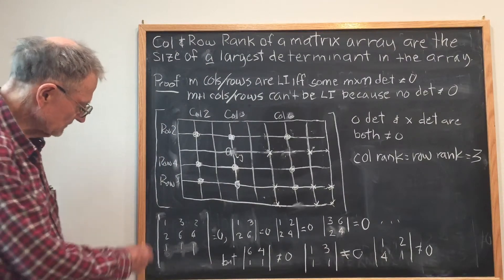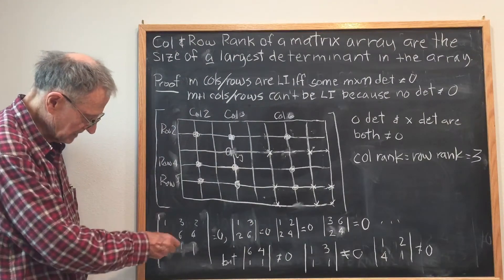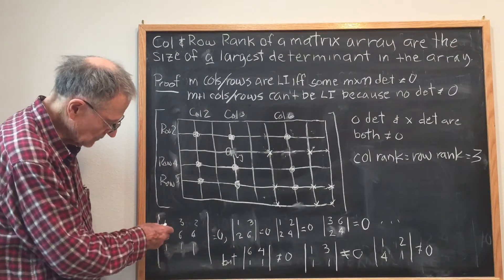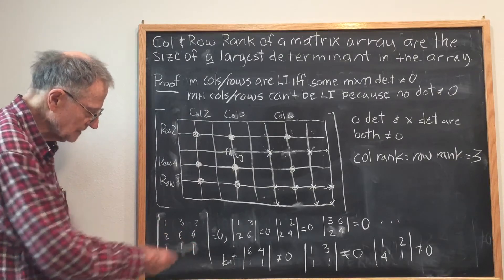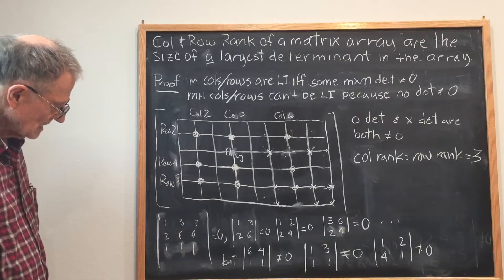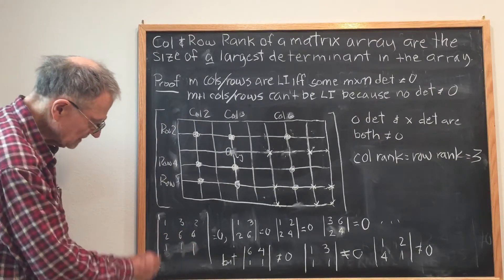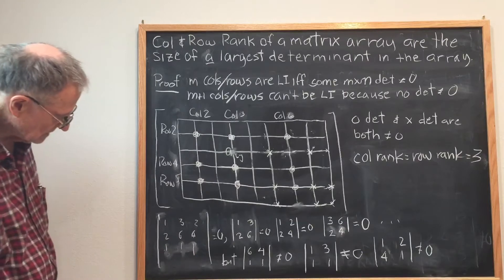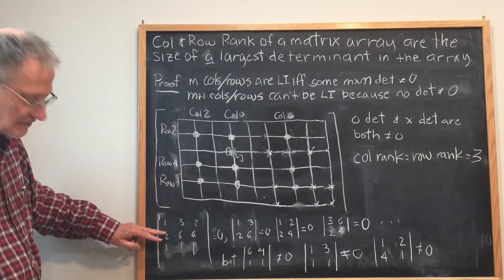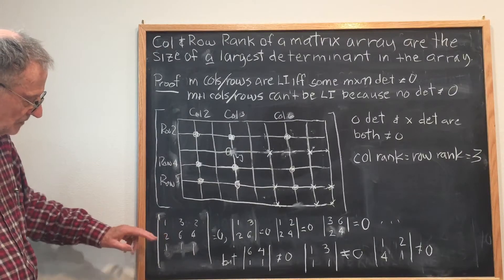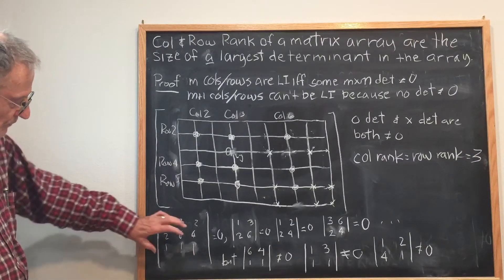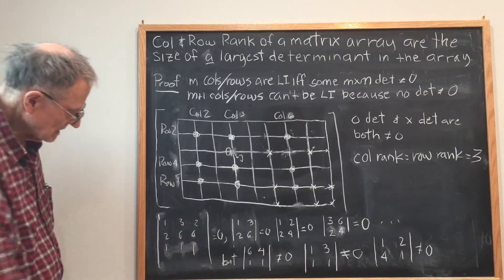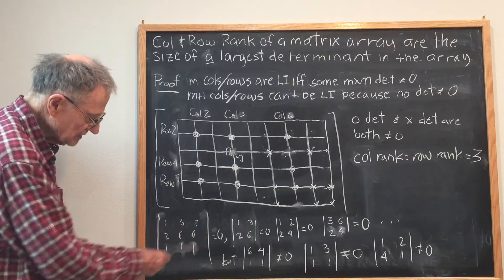As another example, I sketched an array here: 1, 3, 2 / 2, 6, 4 / 1, 1, 1. Its determinant is equal to zero because the first two rows are linearly dependent. So the only 3 by 3 determinant here is equal to zero.